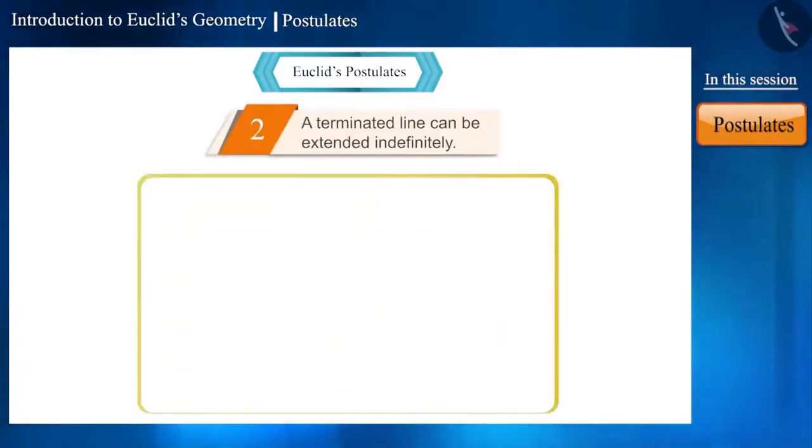Friends, can you tell what is a terminating line? We know that a line is a straight and a series of never-ending points. And we represent a line with arrows on both ends.